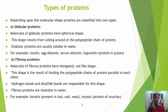Depending upon the molecular shape, proteins are classified into two types. First is globular protein. Molecules of globular proteins have a spherical shape. This shape results from the coiling of the polypeptide chain. Globular proteins are usually soluble in water. Examples include insulin, egg albumin, serum albumin, and legumelins, which are proteins present in pulses.